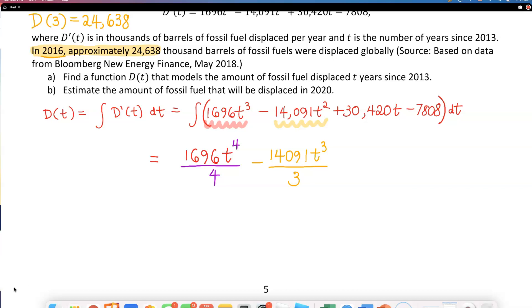Next term, I'm going to have plus 30,420t² divided by 2. And the very last term, which is just a constant, I'm just going to put minus 7808t. And don't forget, please don't forget to put the constant of integration, plus C.